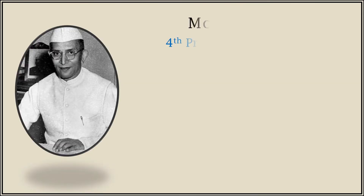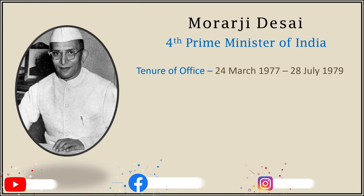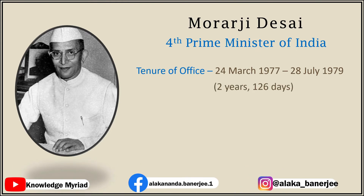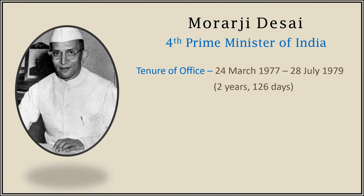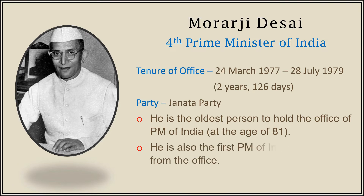After Prime Minister Indira Gandhi, Morarji Desai became the fourth and the first non-Congress Prime Minister of India. He was in office from 24th March 1977 to 28th July 1979, for a period of two years and 126 days. He belonged to the Janata Party. At the age of 81, he became the oldest person to hold the office of Prime Minister of India, and also the first Prime Minister to resign from office.